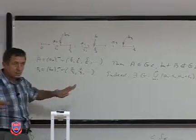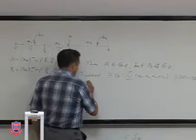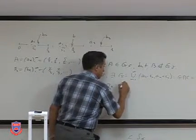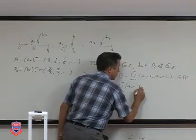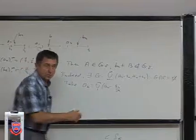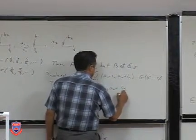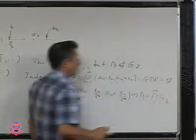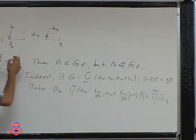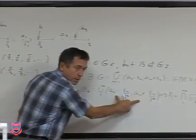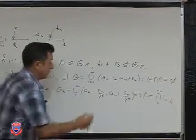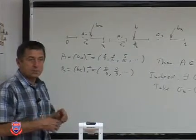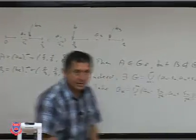So there is an open set which separates all these points. Then we can take G_k, which is the union from n=1 to infinity of (a_n minus epsilon_n over 2k, a_n plus epsilon_n over 2k) — dividing by something that goes to zero. Clearly, A will be the intersection of the sets G_k, since if you take any concrete point a_1, this intersection gives only that one point, and similarly for other points. So both embeddings are trivial.